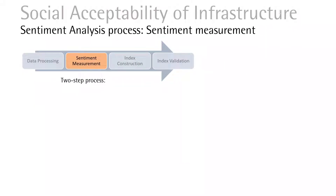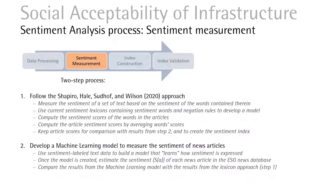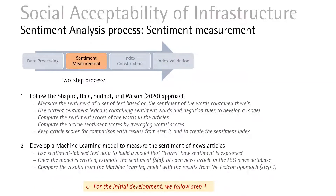Now we move to the sentiment measurement step. Here we have a two-step process. In the first step, we follow Shepardow and colleagues' approach, using sentiment lexicon coins to estimate the word sentiment scores. The article score can be computed as the average value of the word scores. This is a simple approach, but it can provide the nature of this social acceptance information. In the second step, we can build a machine learning model based on the first step's approach to improve the predictions or the sentiment analysis. In our current research, as an initial development, we follow the first step.